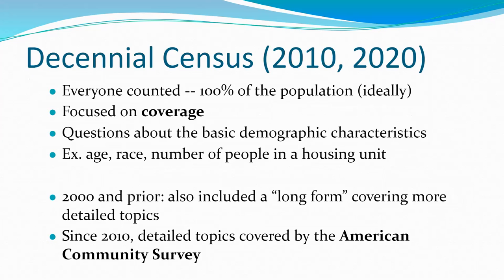Therefore we have the decennial census every 10 years. Everyone is supposed to be counted - every single person, citizens and non-citizens. It's 100%, not a sample. Because coverage is the focus, the questions are pretty limited: age, race, population counts, et cetera. Since 2010, the detailed long-form questions are now covered by the ACS instead.